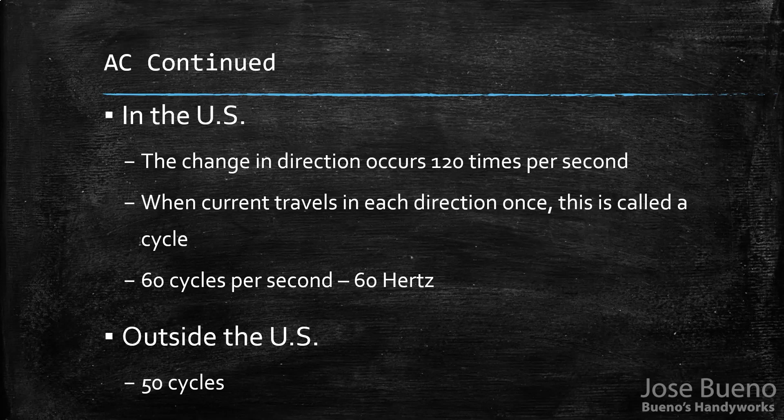Outside the USA — in Europe, for example — the current changes about 100 times a second, giving 50 cycles per second, or 50 Hertz. Quick recap: with AC, current flows in both directions but not at the same time. It travels one way, stops, then travels the other — 120 times per second, 60 cycles per second.